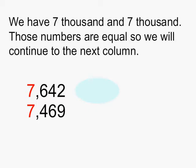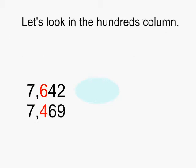In one number we have 7,000, and the other number we have 7,000. Those numbers are equal, so we will continue to the next column, which is our hundreds column.